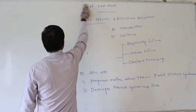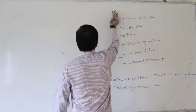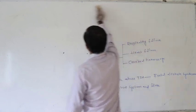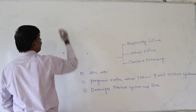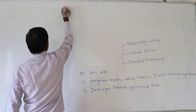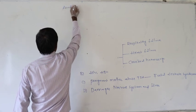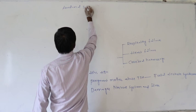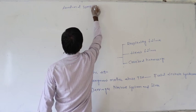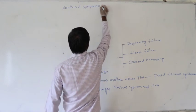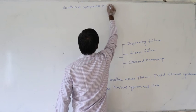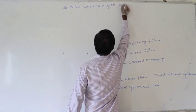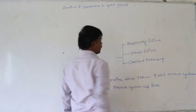Next are the abnormal symptoms in sports persons due to the abuse of anabolic steroids. What are the abnormal characters and abnormal symptoms in sports persons?